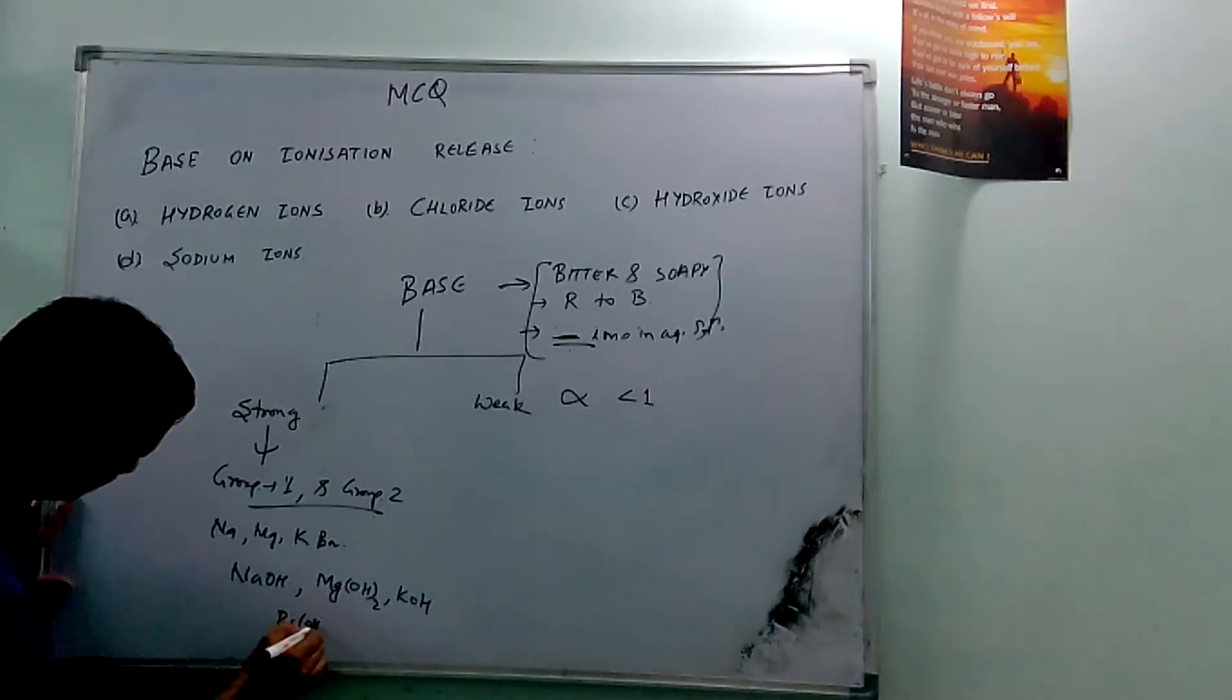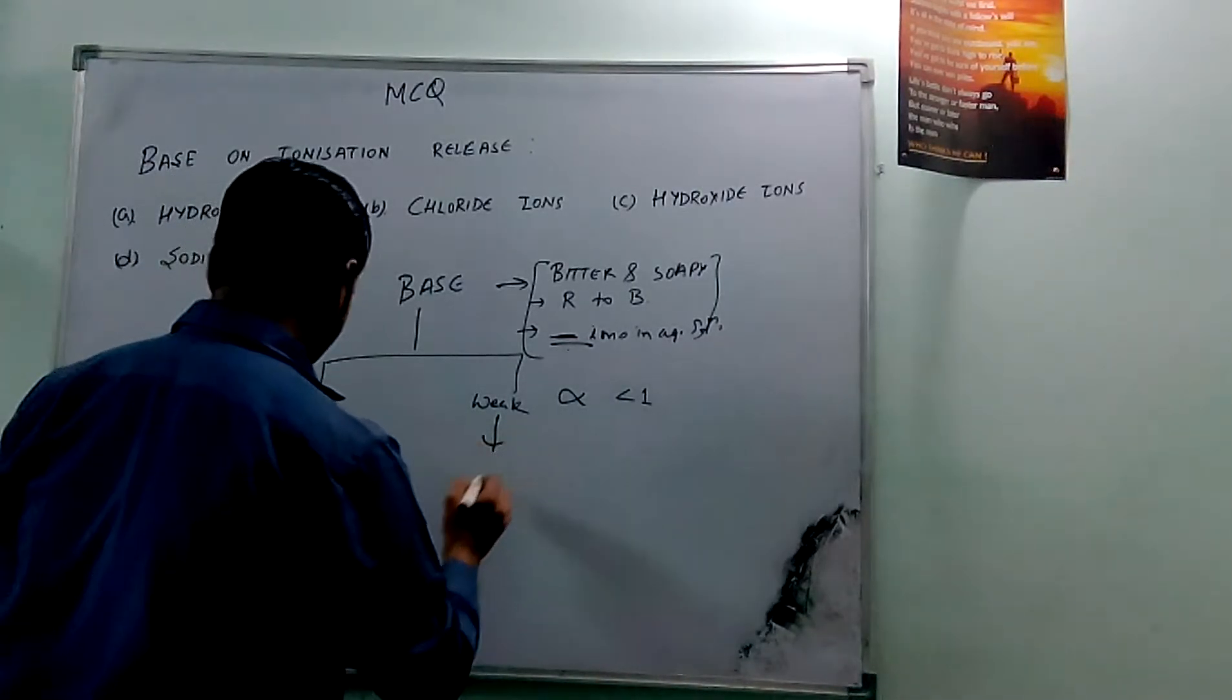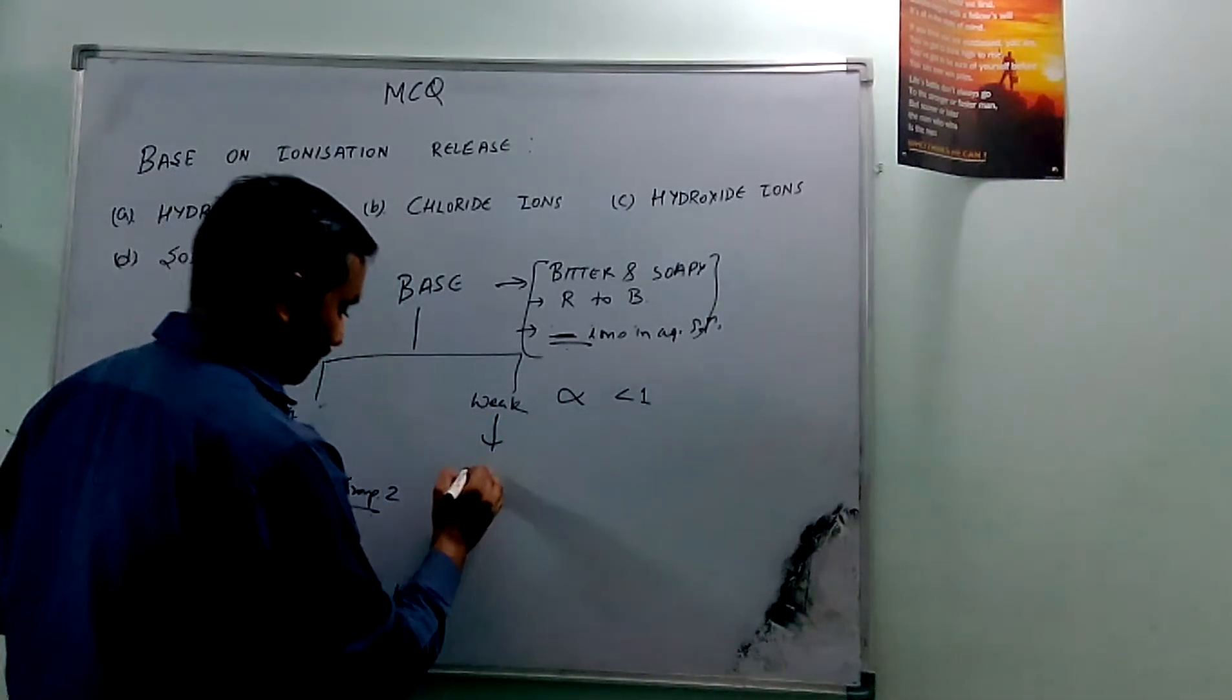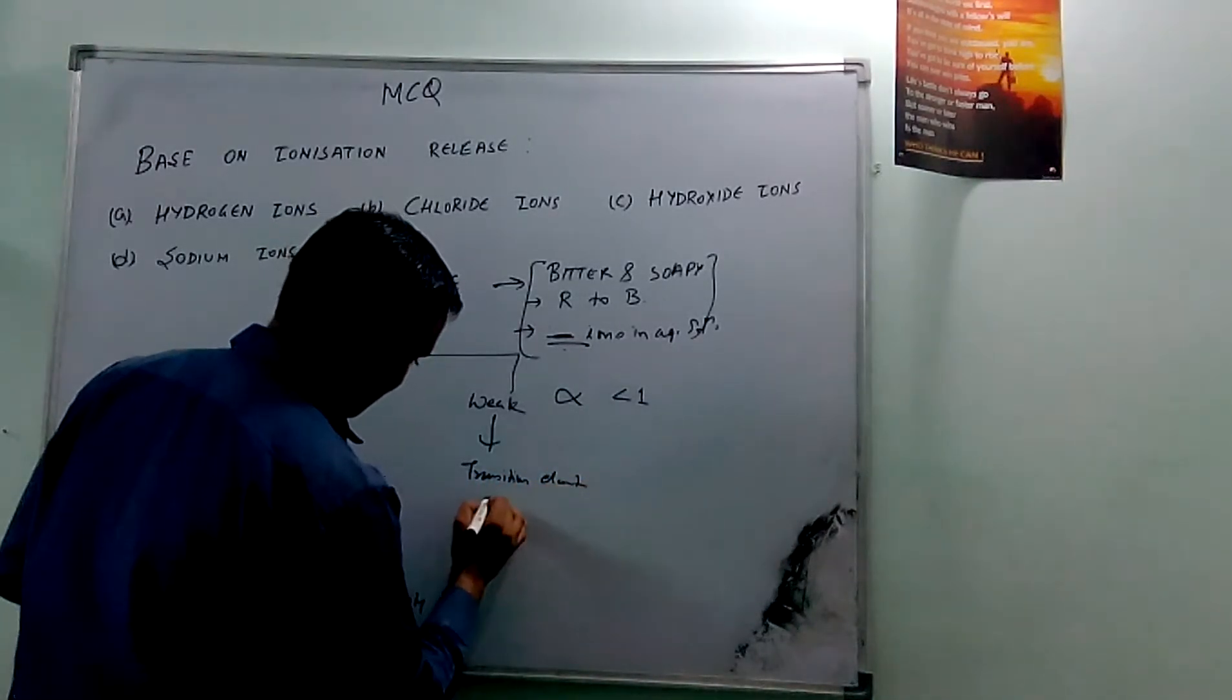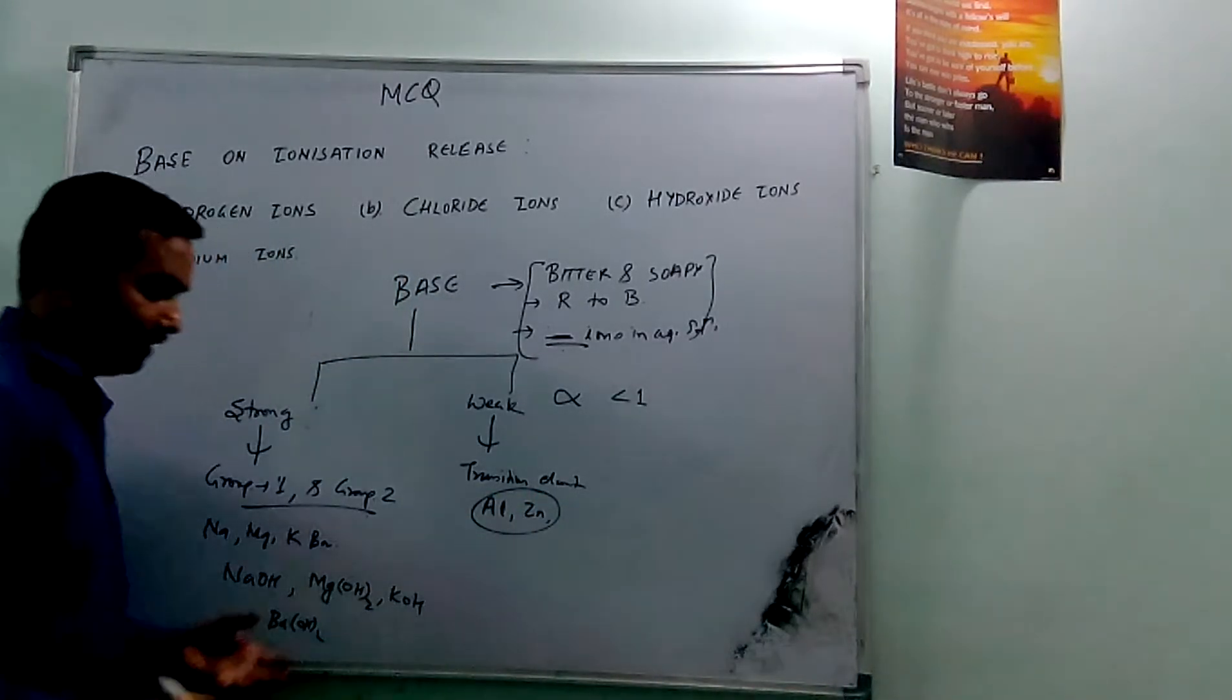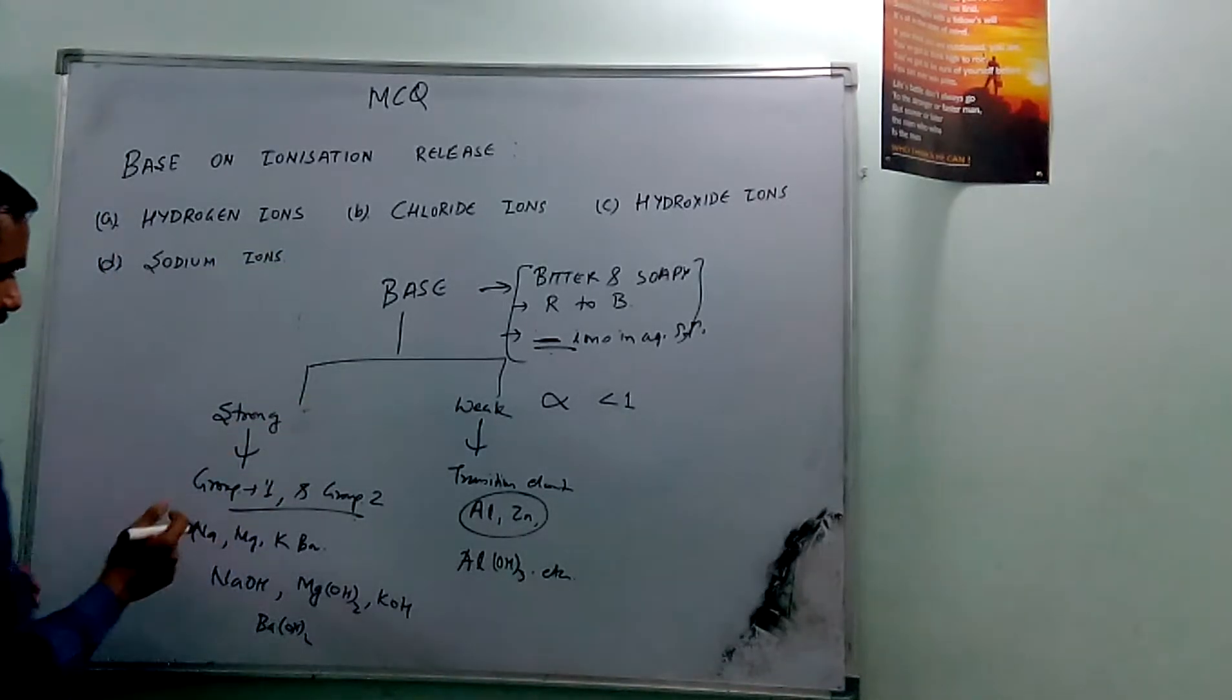Weak bases are those bases which are produced from transition elements, like aluminum, zinc, or we can say they are the middle order reactivity series elements which produce bases, so Al(OH)3.